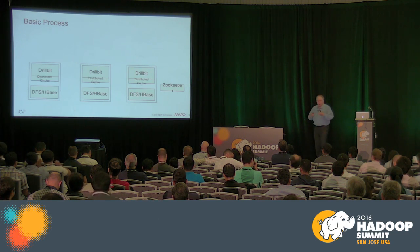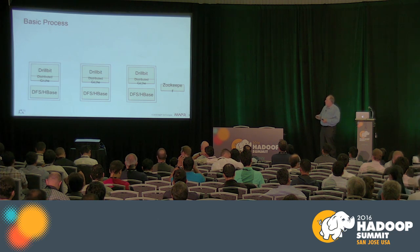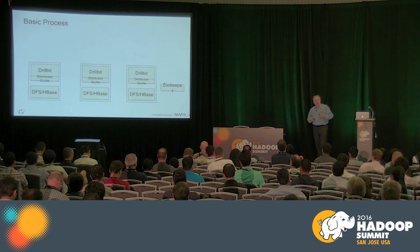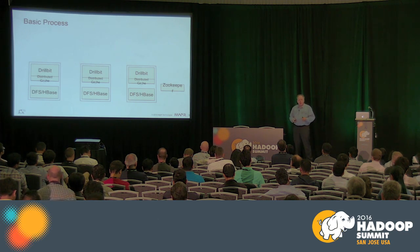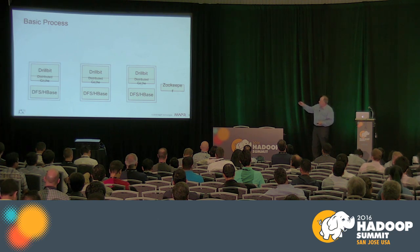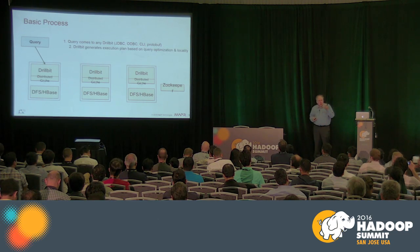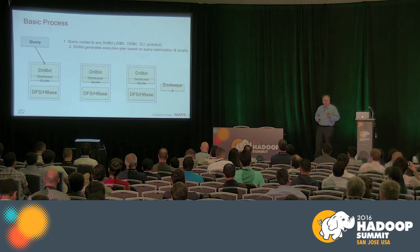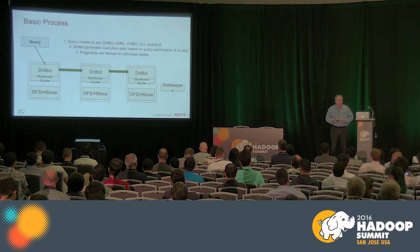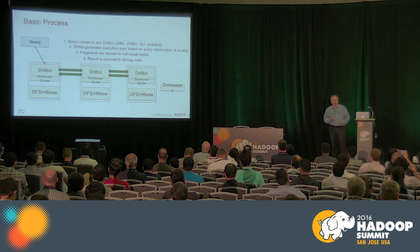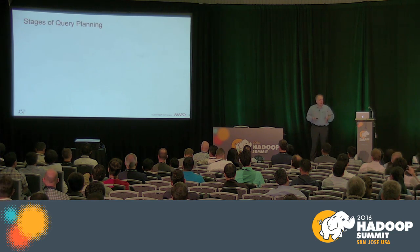Drill works in a completely distributed way. There are multiple processes called drill bits — that's a pun, in homage to Apache Pig, which is the project with the most density of puns ever. Drill maintains a distributed cache. When you send a query in, it can go to any drill bit, and the drill bits then cooperate. First, there's an execution plan done by that first drill bit, called the foreman. It communicates with the other drill bits so they understand what query needs to be done and which part they do. All results are collected back on the foreman or distributed, then returned to the origin of the query.